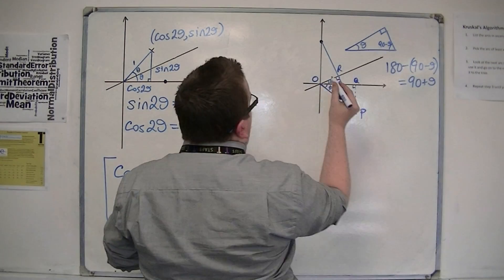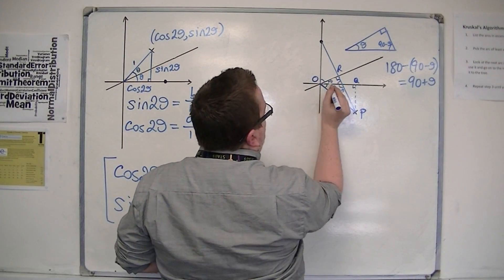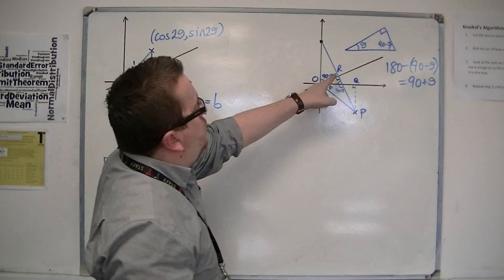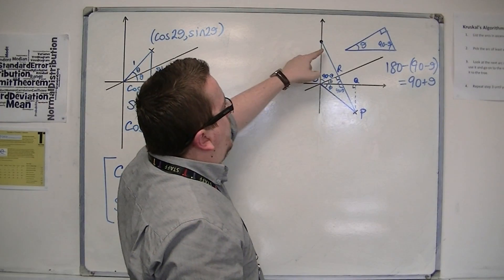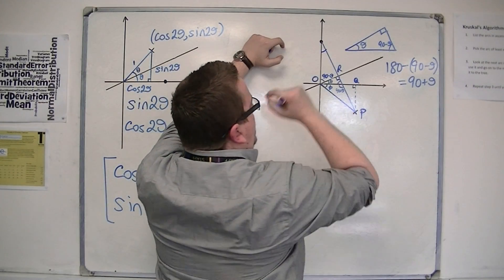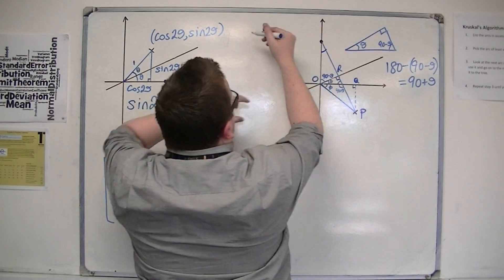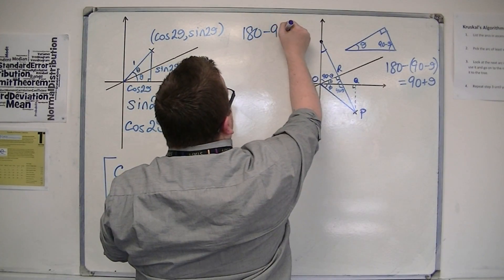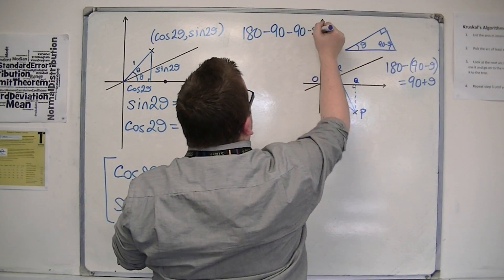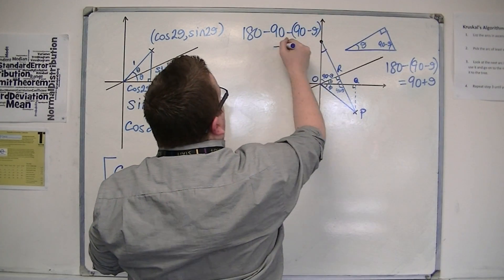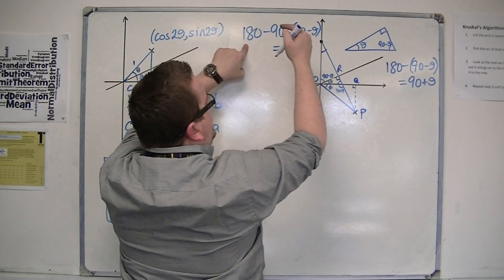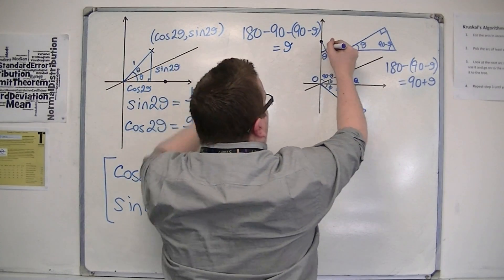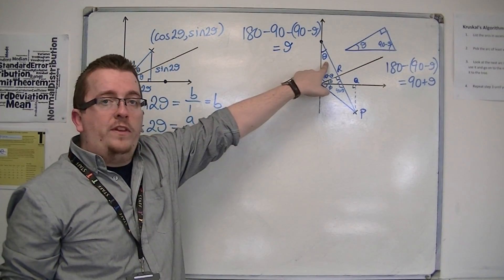So what we have here is that this angle must be 90 minus theta, and that's a right angle there. So I can work out what that angle needs to be by doing 180 take away that 90, take away the 90 minus theta. And so, lo and behold, what I get is 180 take away 90 take away 90 is 0, and the 2 minus has become a plus, so that's theta. So this angle in the top left here is theta.